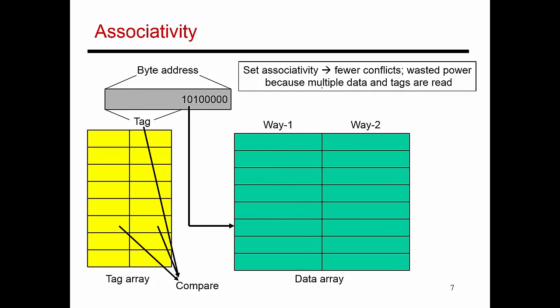The next thing I can do is make my cache set associative. The caches we had seen until now were direct mapped, which means that a given address maps to a unique set, and in that set, there's only one location where the data can be placed.